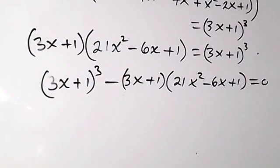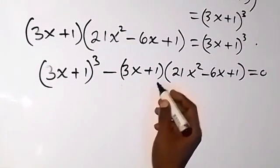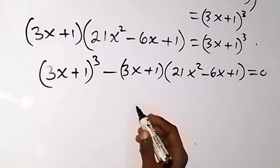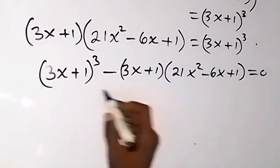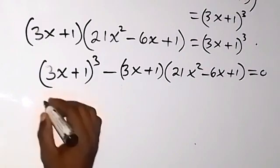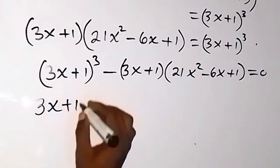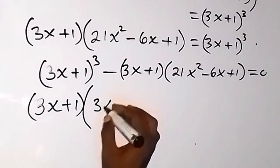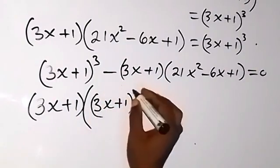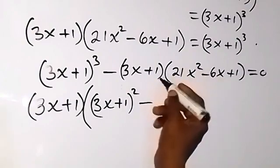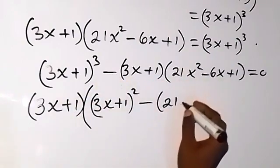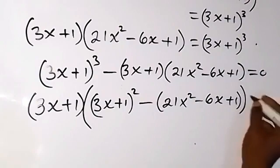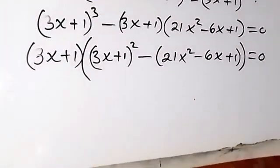We can factor out what is common. Here 3x plus 1 is common in both terms, so we take it out: (3x plus 1) times [(3x plus 1)² minus (21x² minus 6x plus 1)] equals zero.